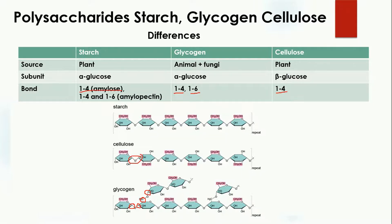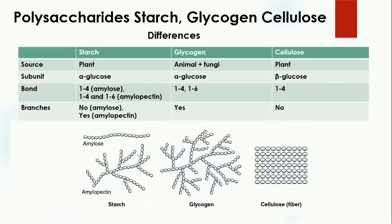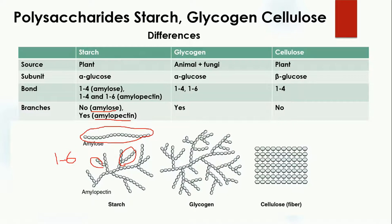Regarding branches: amylose has no branches — here you can see its straight structure. Amylopectin has branches due to its 1,6 linkage. Glycogen also has many branches because it also has 1,6 linkage. Cellulose does not have any branches because it has no 1,6 linkage, so all chains are straight.